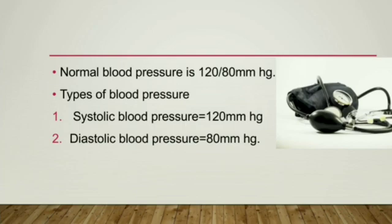Types of blood pressure: systolic blood pressure and diastolic blood pressure. Systolic blood pressure has a normal value of 120 mmHg, and diastolic blood pressure is 80 mmHg.